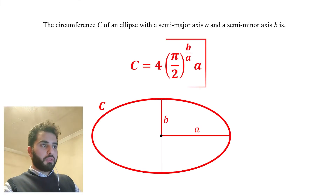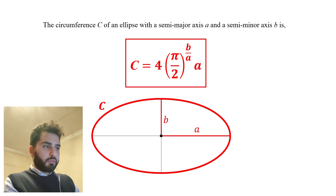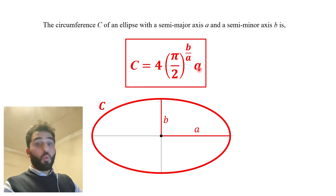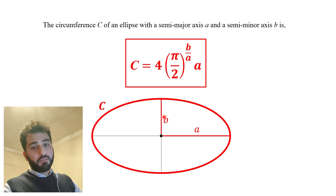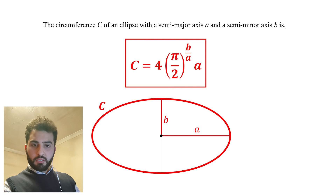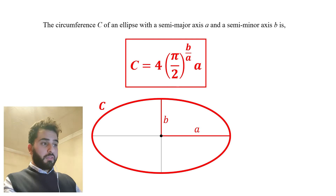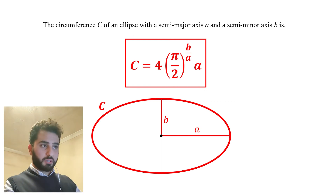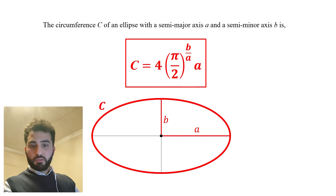This is how I came up with the formula to calculate the exact circumference of an ellipse. The circumference C of an ellipse equals 4 times (pi over 2) raised to the power (b over a), times a, where a is the semi-major axis and b is the semi-minor axis. I hope you enjoyed this demonstration. Please share your feedback in the comments — if you think I made mistakes, if my method is incorrect, or if something is unclear, please let me know. Take care.